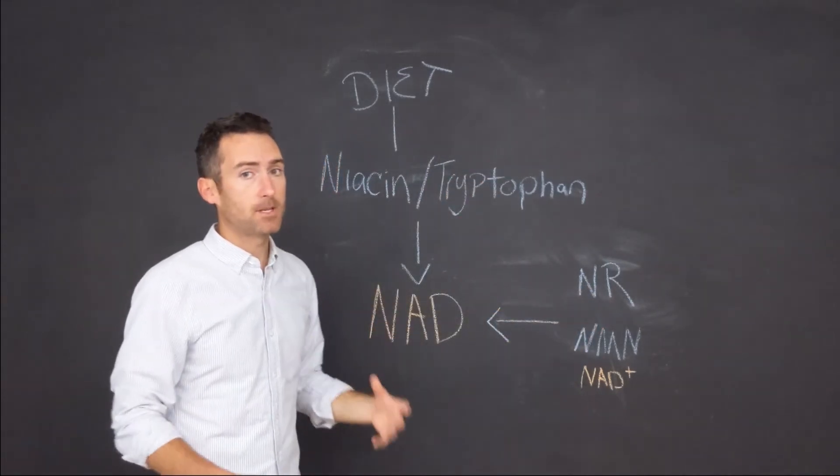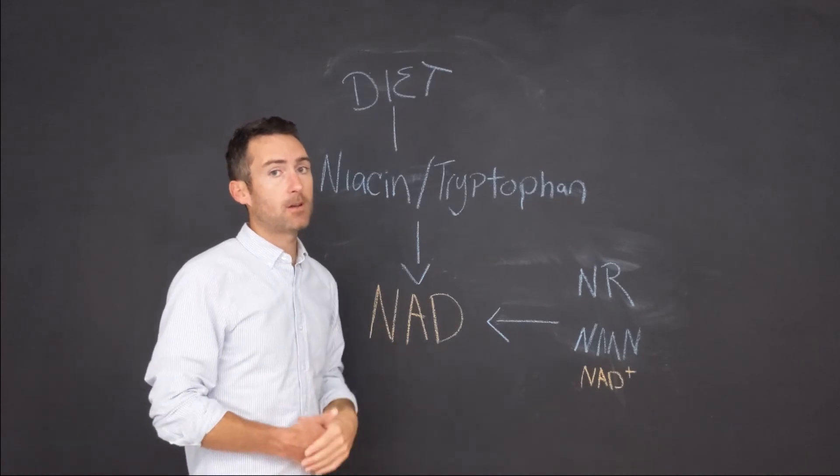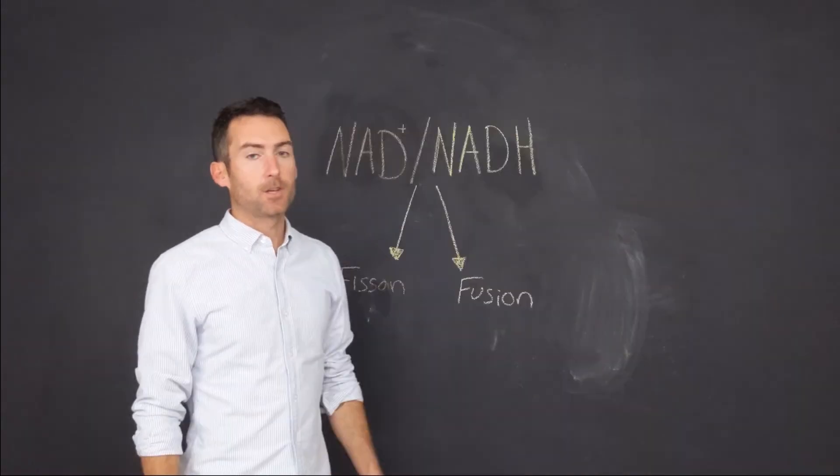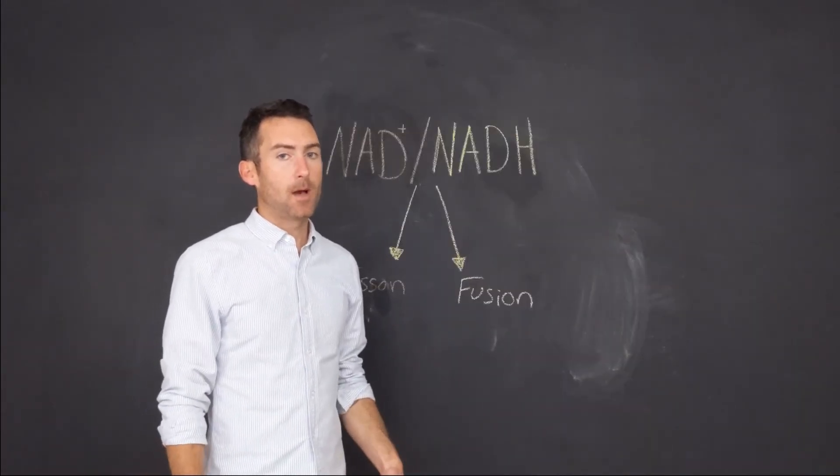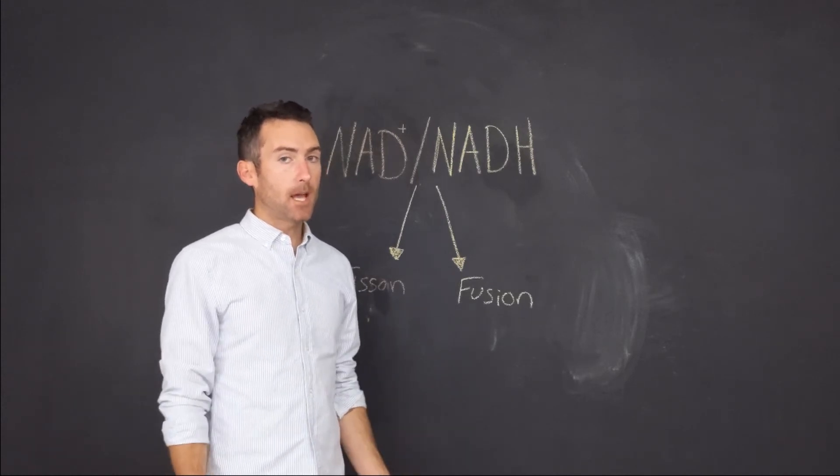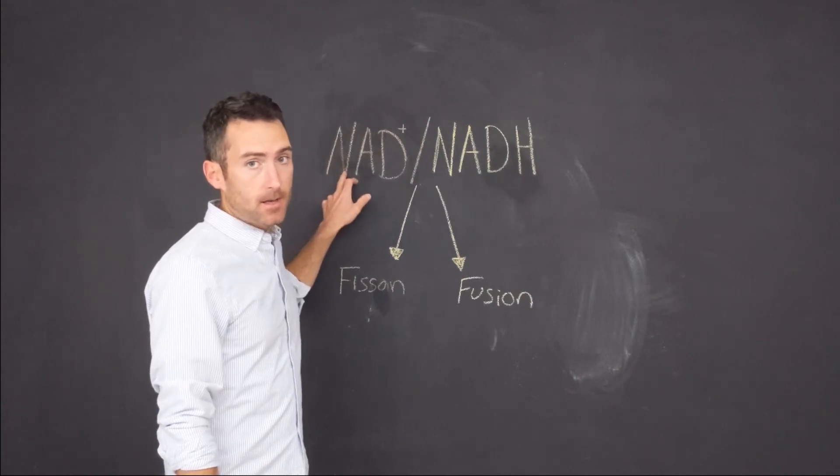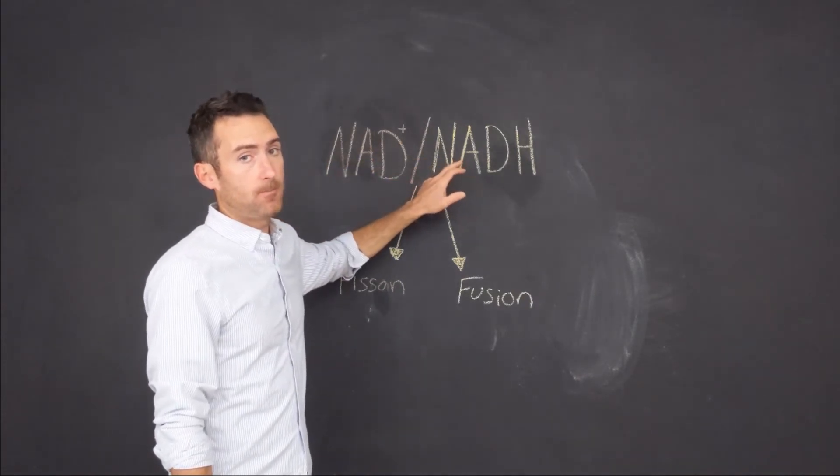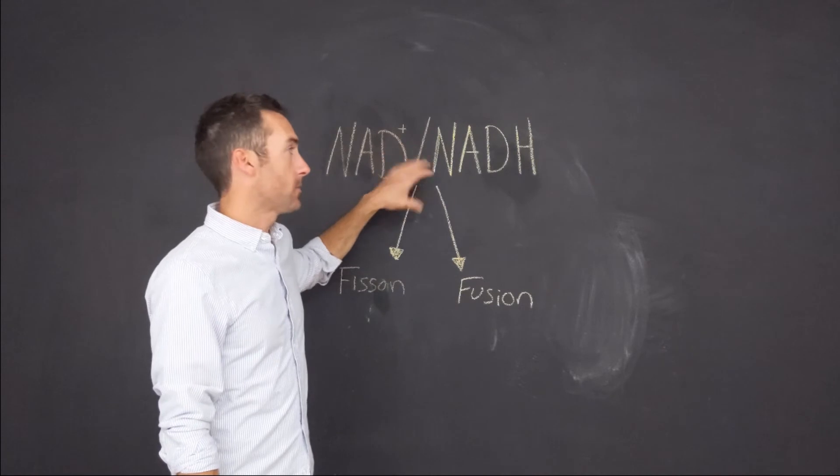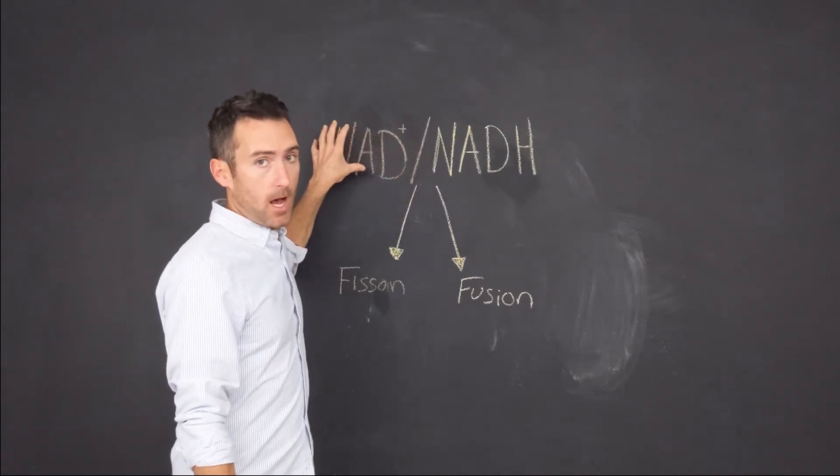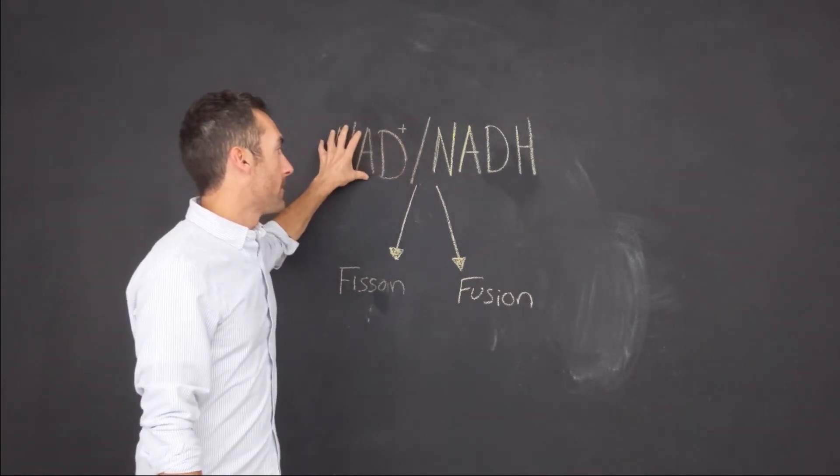to make NAD is a fantastic way to make sure that your cells are producing enough energy. All right, so I wanted to talk about what happens when you actually take NAD. So when you take NAD, it's increasing your NAD to NADH ratio, and what happens in the cell is when we have a higher NAD pool, the cells are